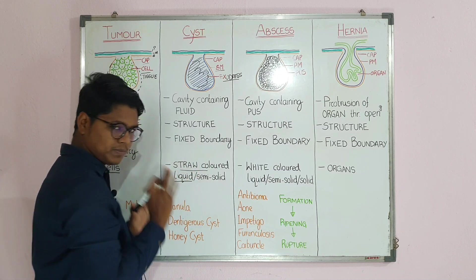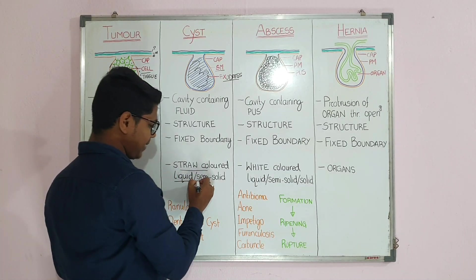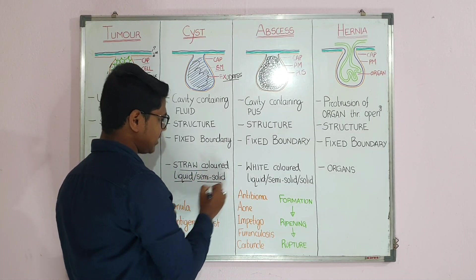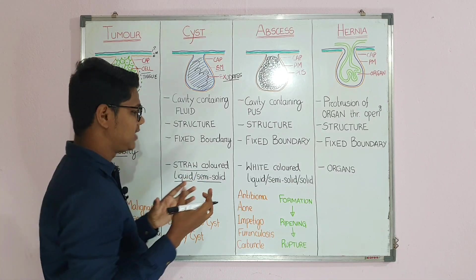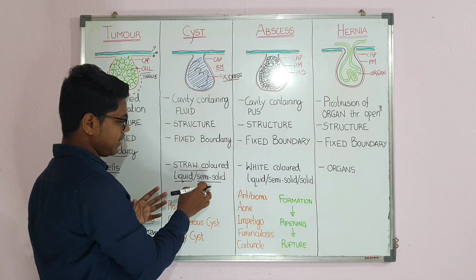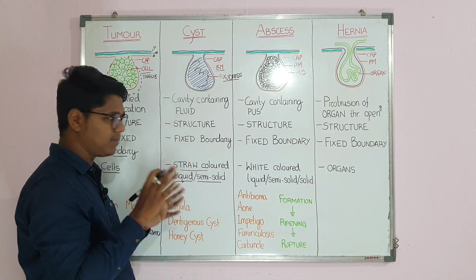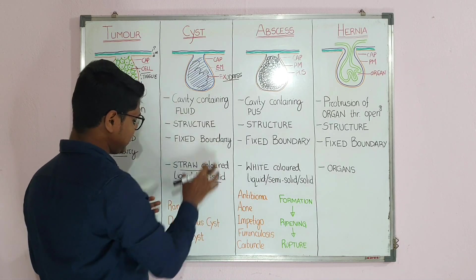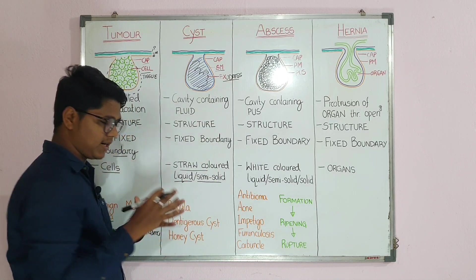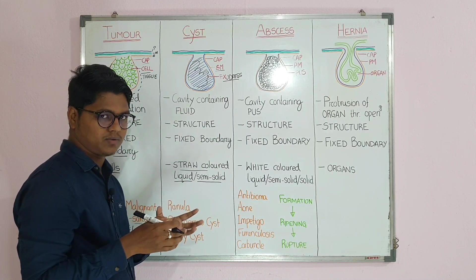The contents of a cyst are straw-colored liquid most of the time. Sometimes in long-standing cases it may become semi-solid, or you may find fibrin clots.